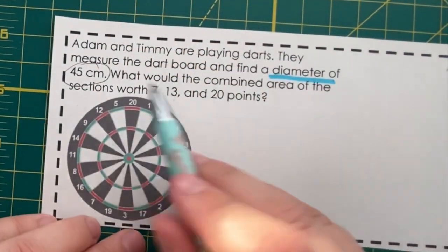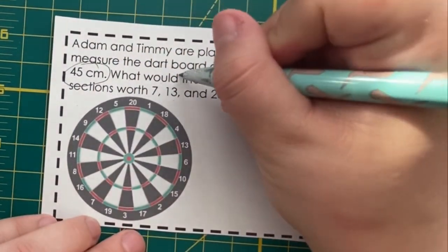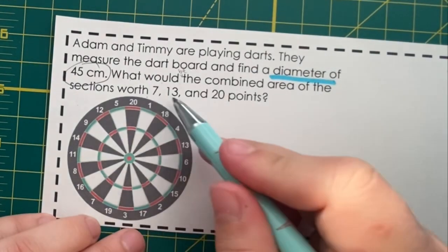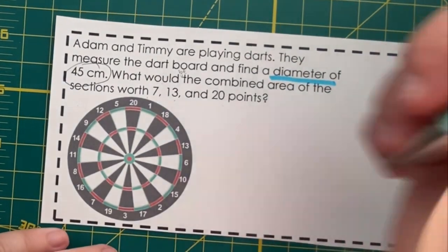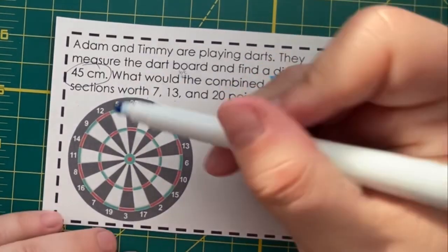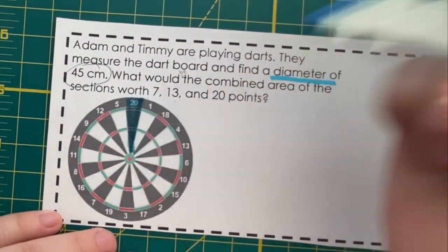What would be the combined area of the sections 17, 13, and 20 points? Well, that would be this section.